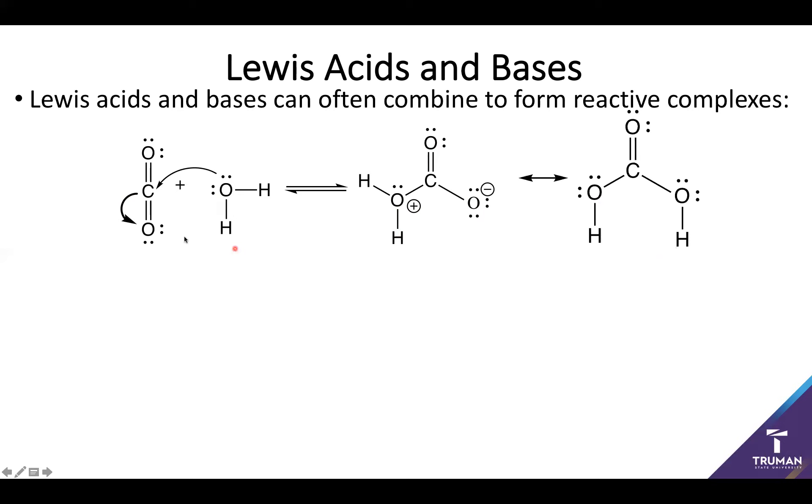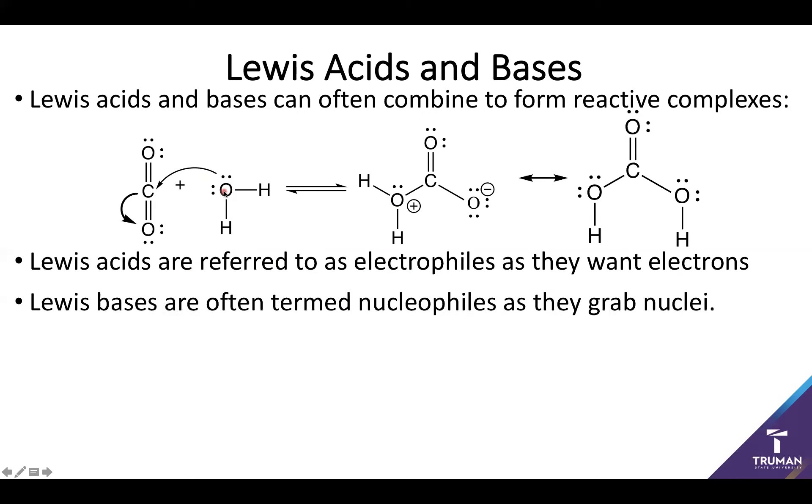One of the ways to look at how these form is to look at what the electrons want. These Lewis acids, because they essentially want more electrons, are often called electrophiles. And these Lewis bases, because they want to reach out and grab that positive charge, are often termed nucleophiles, as they grab out and grab that positively charged nuclei. So we're mostly going to be using the acid-base nomenclature. However, most of organic chemistry is going to focus on this behavior of moving the electrons and figuring out what they want to do. They're going to use this electrophile-nucleophile terminology, and it's going to be fairly useful as it encompasses a large portion of chemistry.